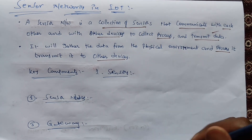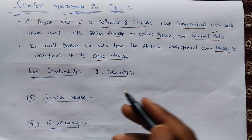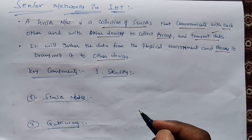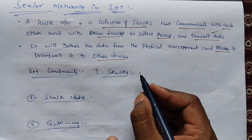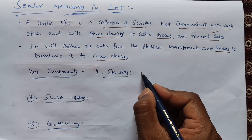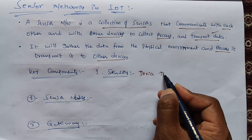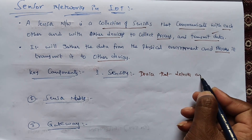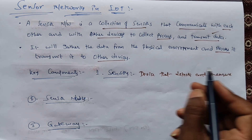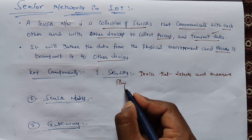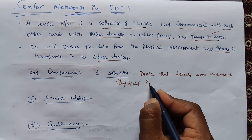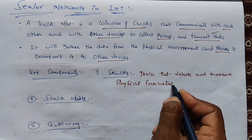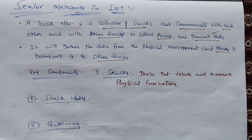The key components in a sensor network — the first one is the sensor. A sensor is a device that detects and measures physical parameters.